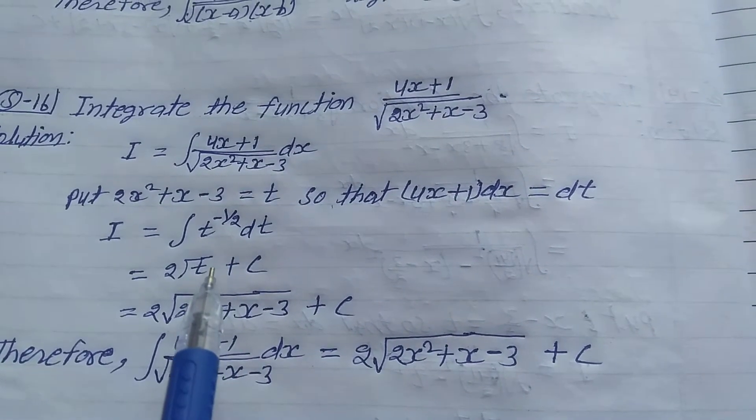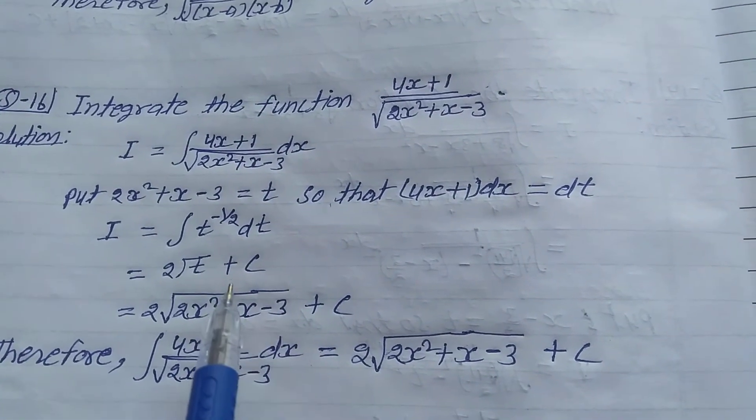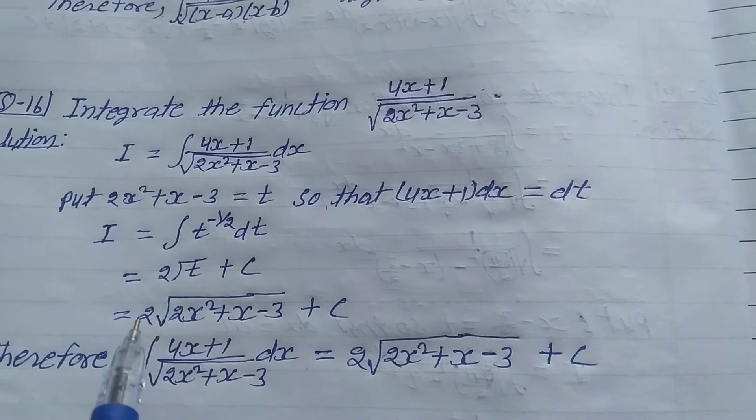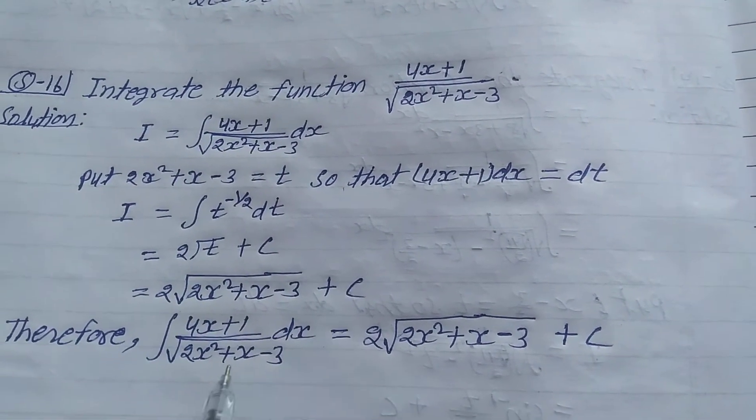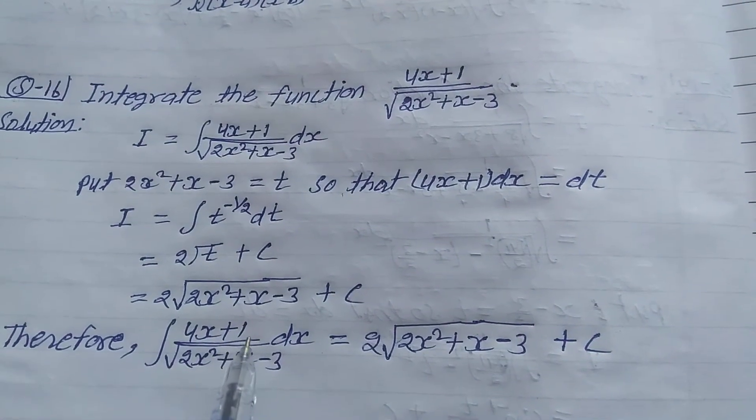So that is written as 2√t + C. Put the t value in terms of x, so it equals 2√(2x² + x - 3) + C.